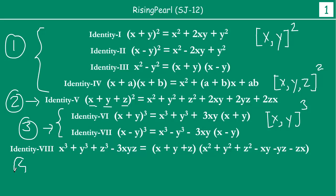Finally, identity 8 has its own group because it is the only identity where you have three variables — x, y, and z — and you are dealing with a cube. One very important part of applying these identities is that you have to quickly relate the question to the appropriate identity. If you spend too much time on this, you will run out of time to actually solve the question. With this background, let us get started on our examples.